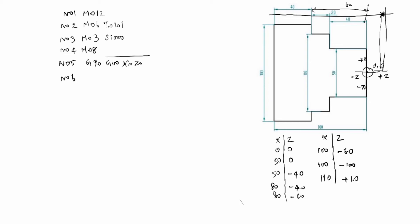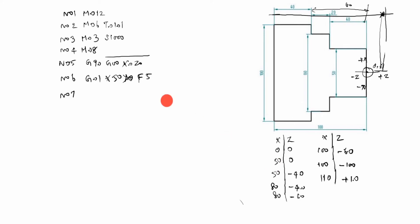N06: G01 X50 Z0, feed rate F5 — this is a linear move. N07: G01 Z minus 40. You see X is already written as 50, so no need to write it again — cancel the repeated X value. G01 Z minus 40.